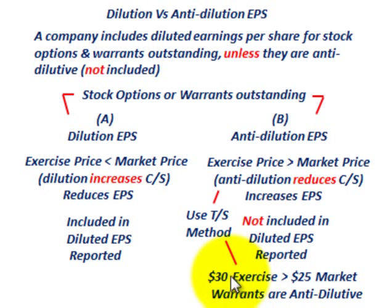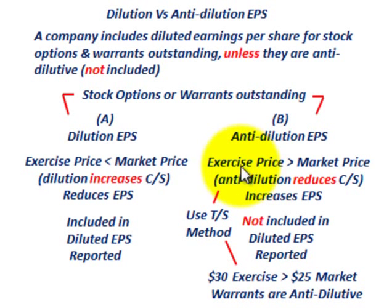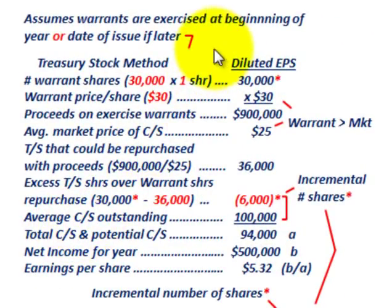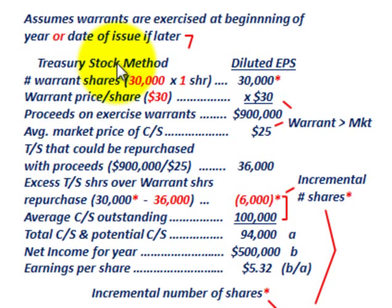The exercise price on those warrants is $30 per share and the market price of the common stock is $25 per share. In this case, the warrants are anti-dilutive by our definition where the exercise price is greater than the market price. We'll go through the logic for calculating those warrants and how they would be issued and how they would affect the diluted earnings per share.